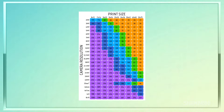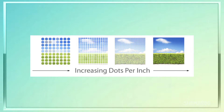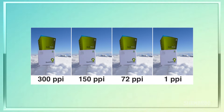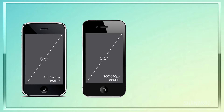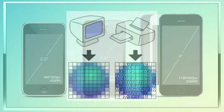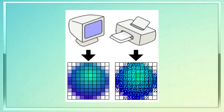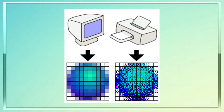PPI stands for pixels per inch and, as you'd expect, refers to the number of pixels per inch in your image. If you make an image larger in Photoshop, you will increase the number of pixels per inch, with Photoshop making up the data, and you will lose quality.